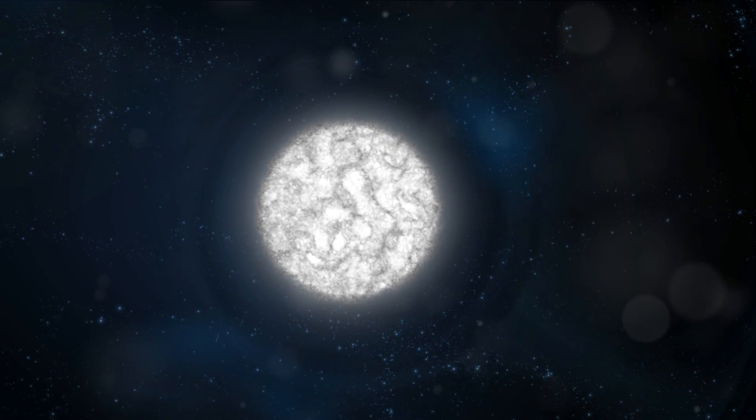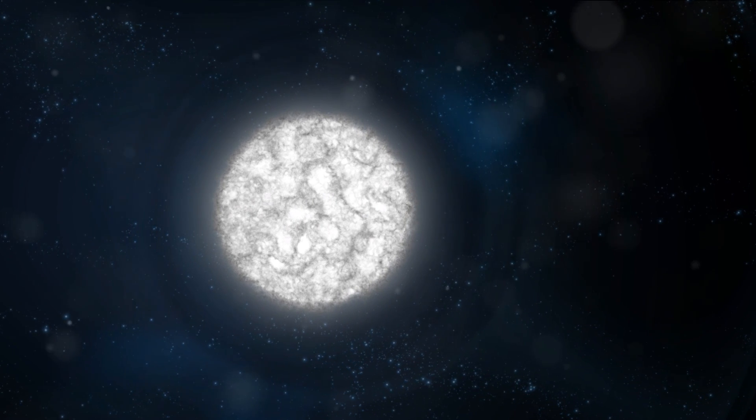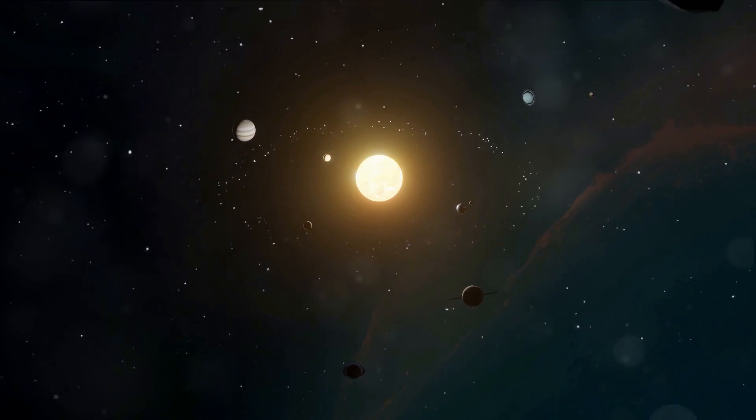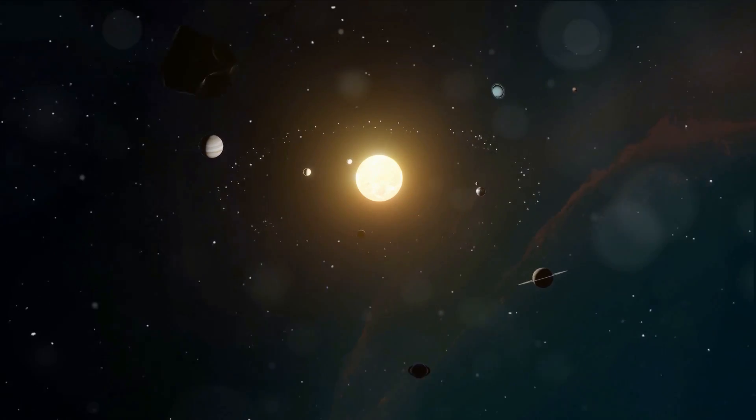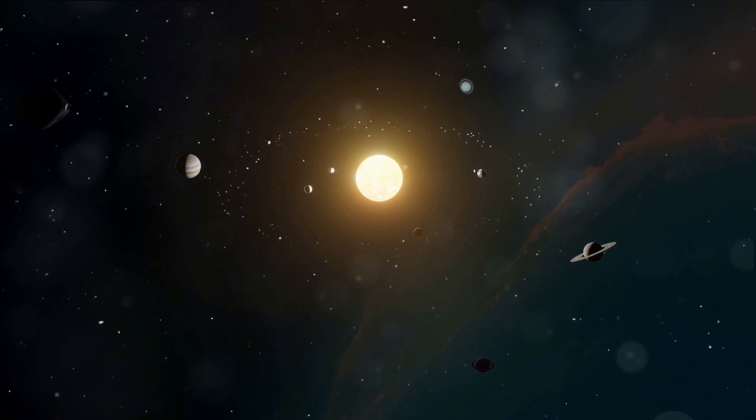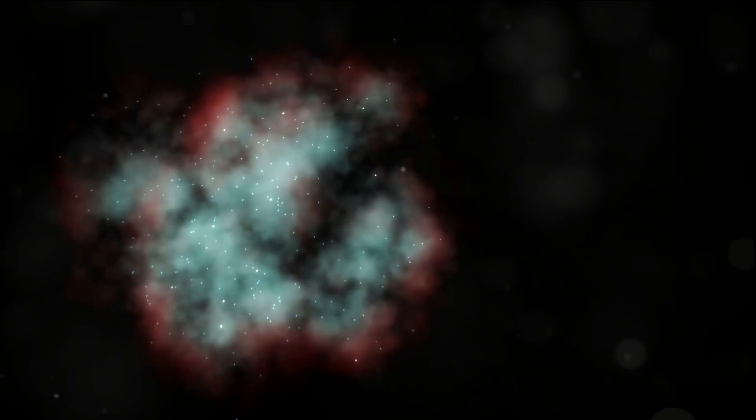White dwarf stars, the dense cooling remnants of low to medium mass stars. Then there are binary and multiple star systems where two or more stars orbit around each other in pairs or groups. And don't forget about stellar nurseries, the regions where new stars are born from collapsing gas and dust.